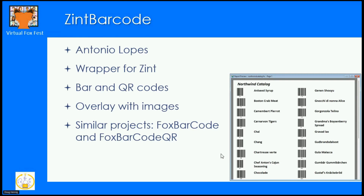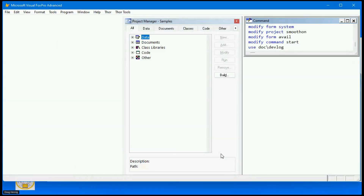The first new project is Zint Barcode, created by Antonio Lopez. It's a wrapper for Zint, a DLL that works with generating barcodes and QR codes. It has a bunch of properties and methods — you set properties the way you want the barcode to look and call methods to generate it. There are already similar projects on VFPX — Fox Barcode and Fox Barcode QR. If you need barcode generation, take a look at both Fox Barcode and Zint Barcode to see which fits your needs.